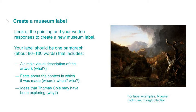Look back at the painting and your written responses to create your museum label. Your label should be a paragraph or about 80 to 100 words long. It should include one or two sentences on each of the following: first, a simple visual description of the artwork — in other words, what are we looking at? Next, some important facts about the artwork's context, like where, when, and by who it was made, and what was going on at that time. Last, what are the ideas the artist was exploring and why did he make this? Now is a good time to pause on the slide to review what you've done so far and write your label.